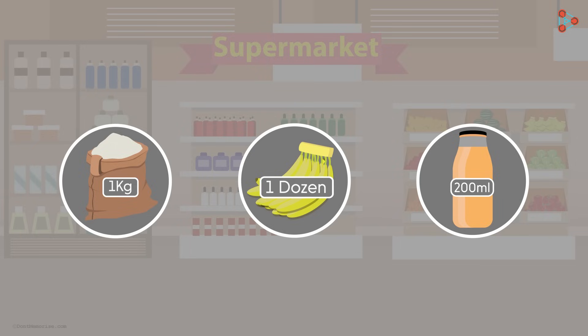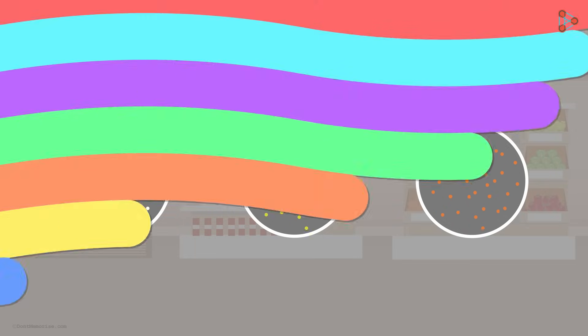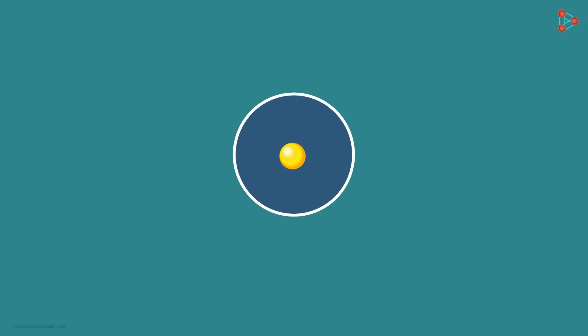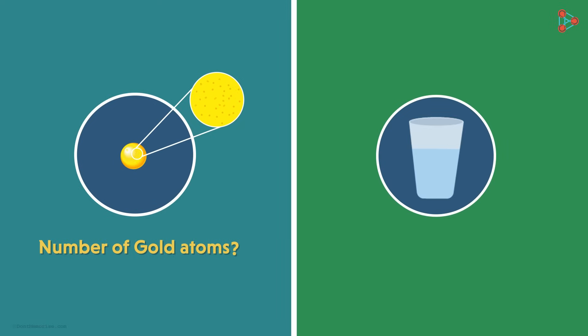But what if I want to measure something in terms of the number of tiny particles present in it? Let me explain this in detail. Looking at this pure gold, can you tell me how many gold atoms are present? Or looking at this glass of water, can you tell me how many water molecules are present?